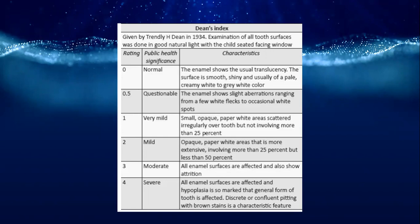Examination is done in good natural light with the child seated facing a window. Rating 0 (normal): enamel shows usual translucency, smooth, shiny, pale creamy white to gray-white color. Rating 0.5 (questionable): slight aberrations from a few white flecks to occasional white spots.